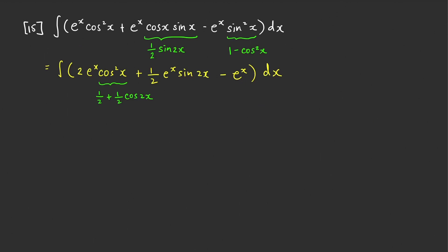Multiplying 2e^x by ½ gives e^x, which cancels with the −e^x term. So we can now write our integral as the integral of e^x·cos(2x) plus ½·e^x·sin(2x) dx. These are common forms that can be evaluated by integration by parts. Let's evaluate the integral of e^x·cos(2x) dx by letting u = e^x and dv = cos(2x)dx.